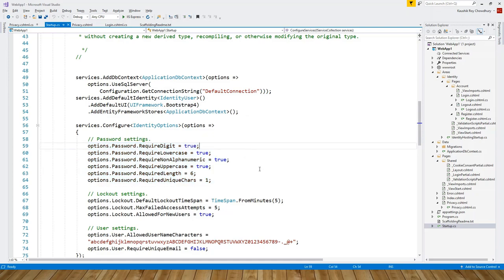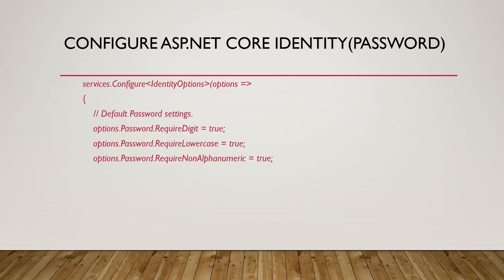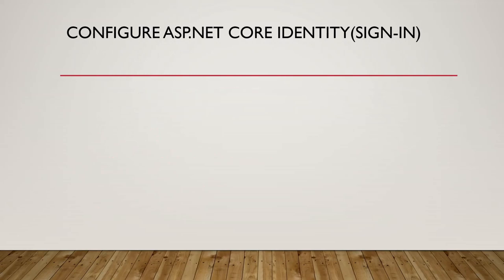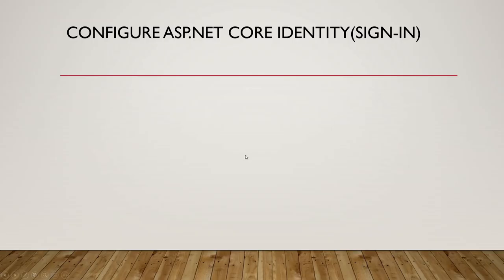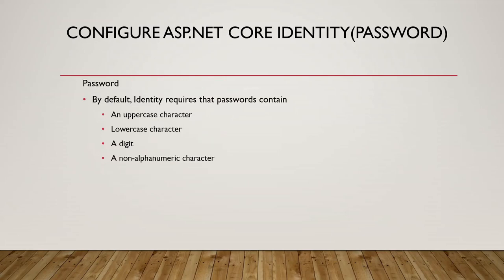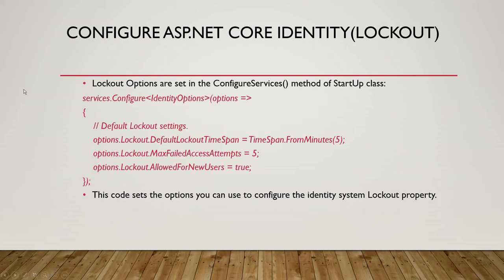It's a good idea to go over these things a couple of times to reinforce the concepts from the last lecture. In a nutshell, we've seen how to configure ASP.NET Core Identity for password and lockout options. See you next time.